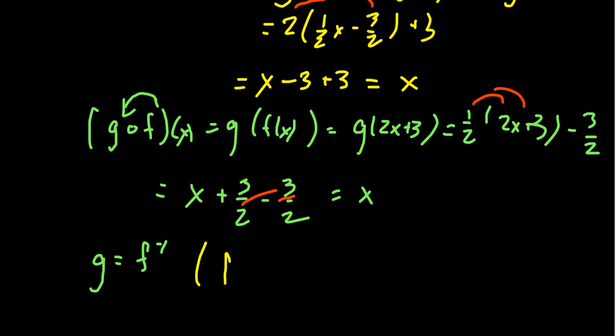Conveniently, this also tells us that F is equal to G inverse. So if a function is an inverse of another, then, you know, they're inverses of each other. F is G's inverse, and G is F's inverse. And one can verify that a function is an inverse of another by this function composition.